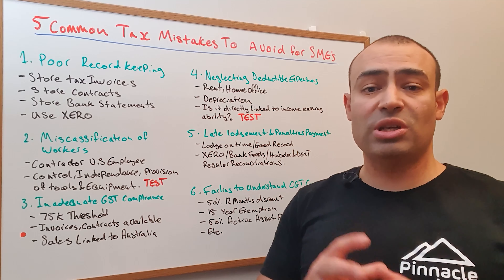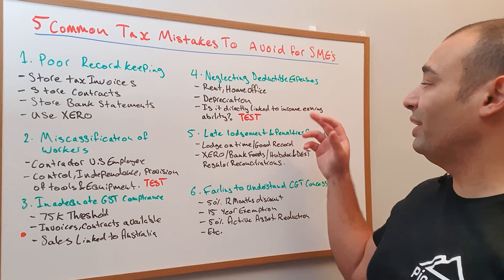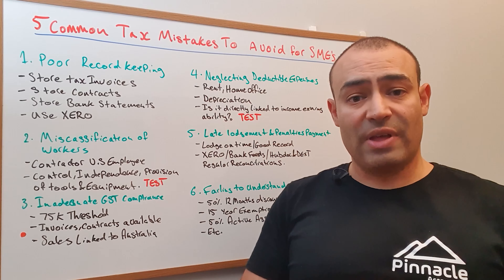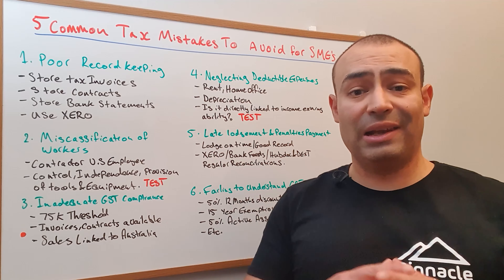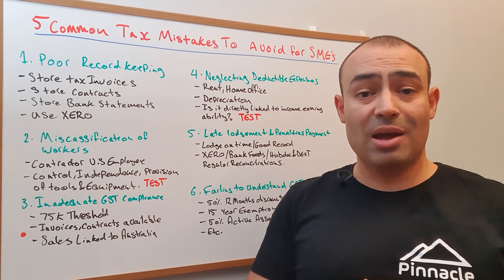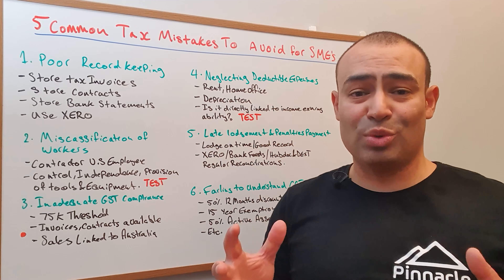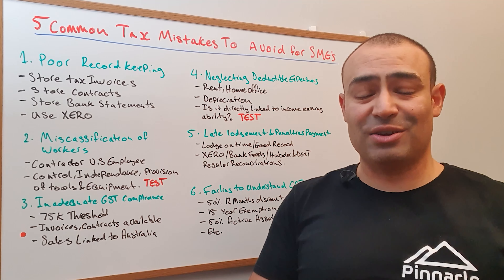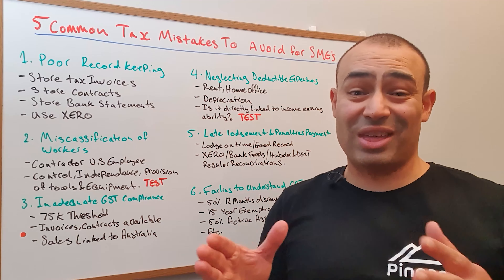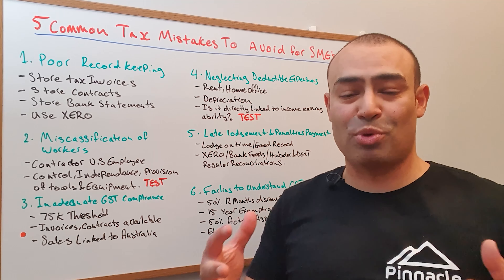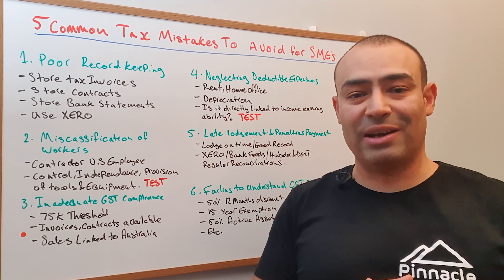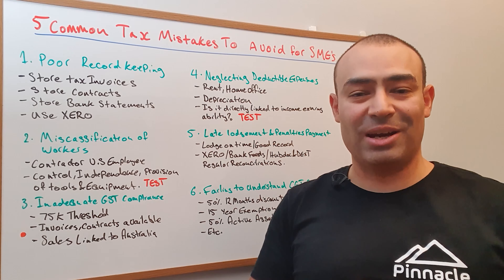Here's a useful test when it comes to deciding what you can deduct: ask whether a particular transaction is directly linked to your ability to earn income. If it is, then legally you will be able to claim it. Just be mindful — for example, if you're a marketing specialist and you want to try to claim your gym membership fees by saying they're directly related to your ability to work because they keep you energized, that's not going to work. It needs to be directly related — something like a marketing course or a marketing program. So if you're trying to get that through, think again.